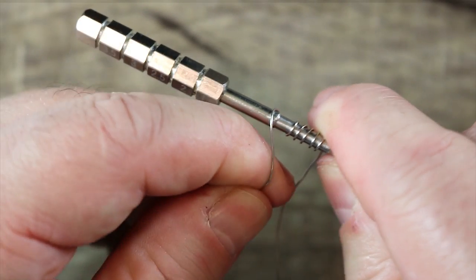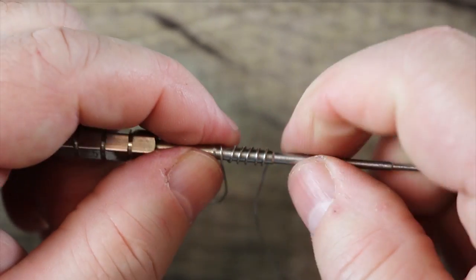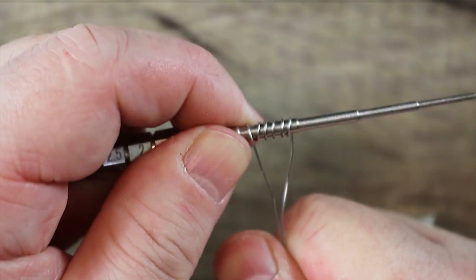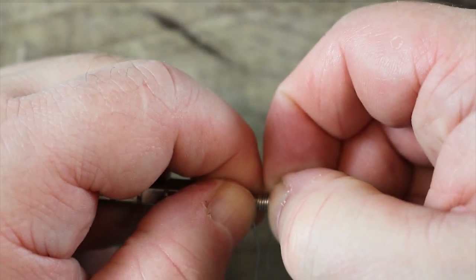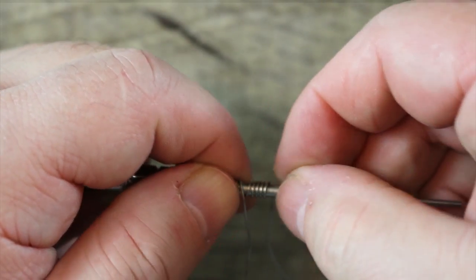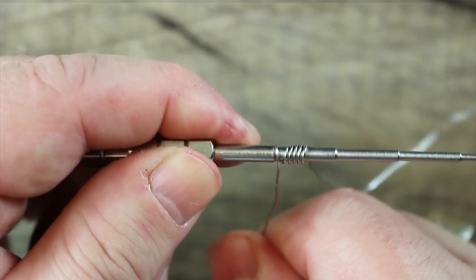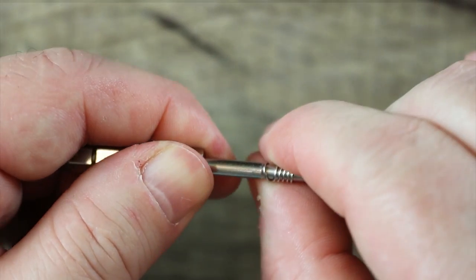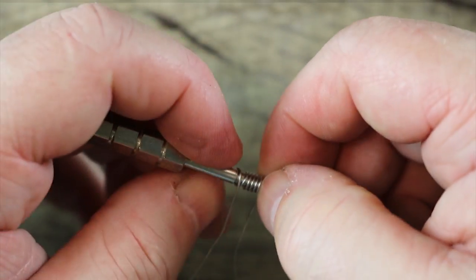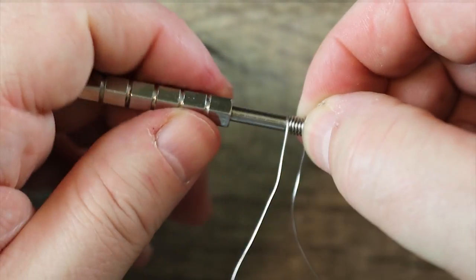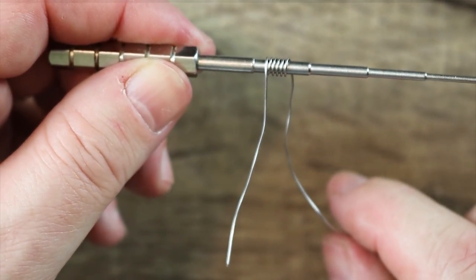Now what you want to do is, you want to take this part right here, and you kind of want to pull it. Make sure you pull it nice and tight. Pull both of them nice and tight. Get it as tight as you possibly can, and what you want to do is, you kind of want to scrunch that build up a little bit, and just get it to be evenly spaced. And don't worry if it looks a little sloppy, it's okay. You just want it, you want it nice and tight. And there you go, there's your coil.